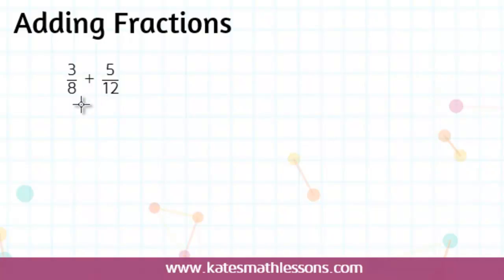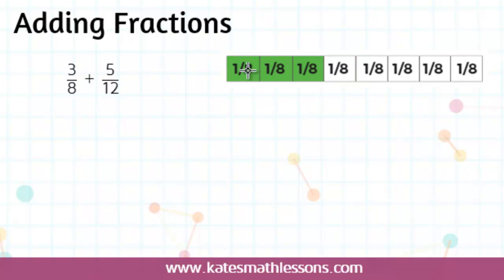Before we talk about how to add these together, sometimes it helps to look at a picture of the fraction. The fraction 3/8 means that the whole has been split into 8 equal parts, and we have 3 out of those 8 parts. Here's a picture of the fraction 3/8: this whole outside rectangle has been split into 8 equal pieces, and we have 3 out of the 8 pieces.